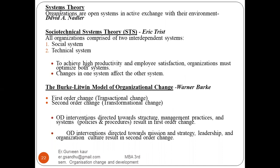Next is system theory. Organizations are open systems in active exchange with their environment, with input, processing, and output. The socio-technical system theory, given by Trist, states that an organization comprises two interdependent systems: the social system and the technical system. To achieve high productivity and employee satisfaction, organizations must optimize both systems. A change in one system affects the other — if the social system changes, the technical system also changes, and vice versa.